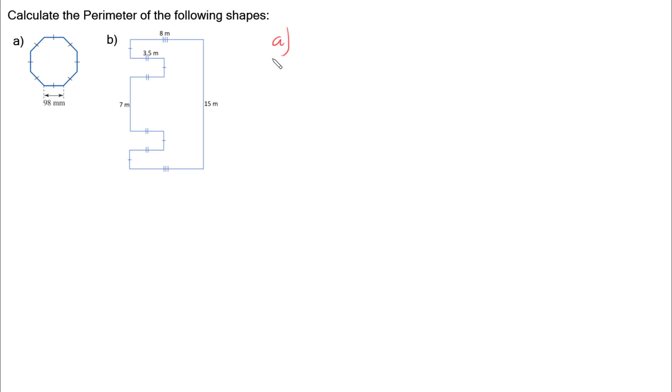So let's have a look at part A. Part A is an octagon. It has one, two, three, four, five, six, seven, eight sides. This side here is marked as 98 millimeters, but each side has one of these little tick marks on it, which means that each one with a single tick mark means it's exactly the same length.